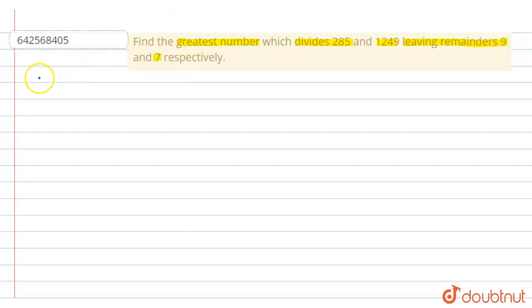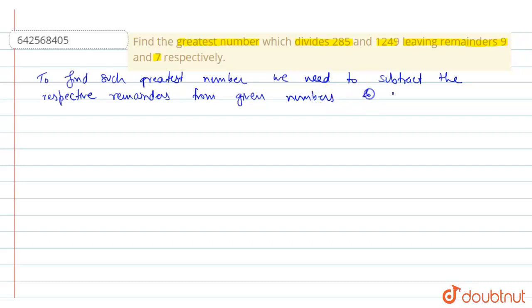In this case, to find such greatest number, we need to subtract the respective remainders from given numbers, and then their HCF will be our required number.